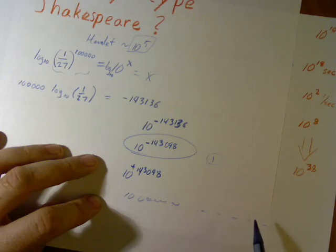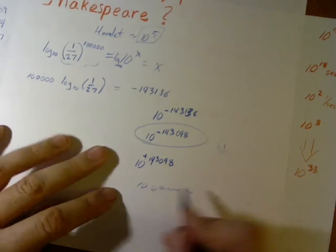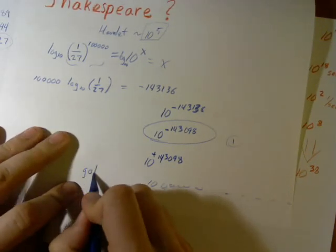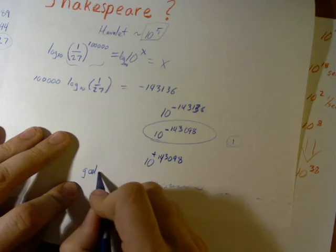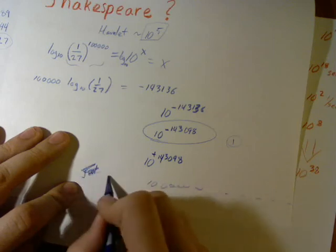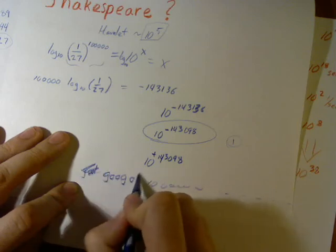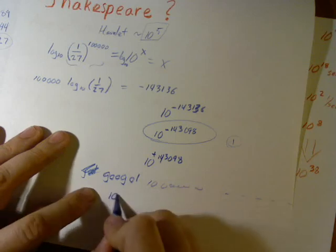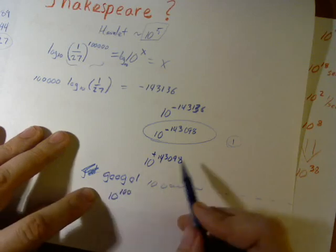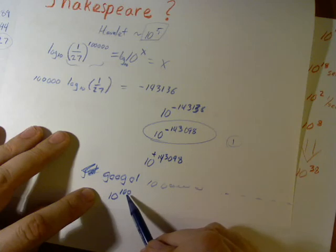10 with that many zeros. You know, you can't even write that many. A googol. Maybe you've heard the number googol. G-O-O-G-O-L. That's 10 to the 100. This number dwarfs that number easily.